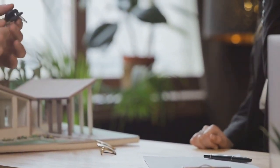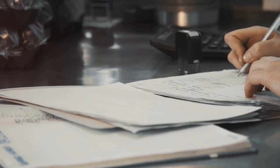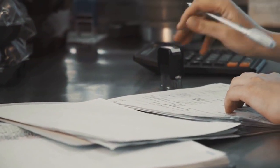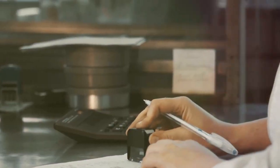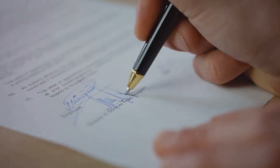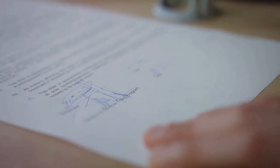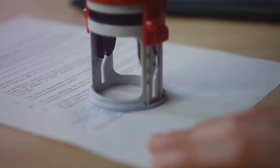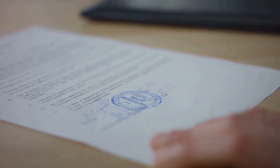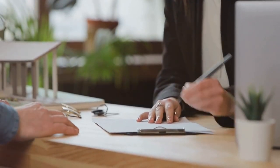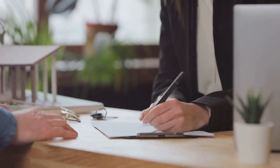Starting with deeds. A deed is like a ticket, a golden ticket that grants you the ownership of a property. It's a written document that officially transfers the title of the property from the seller to the buyer. However, not all deeds are created equal. We have different types of deeds like the warranty deed, the quitclaim deed, and the special warranty deed, each providing varying levels of protection to the buyer.